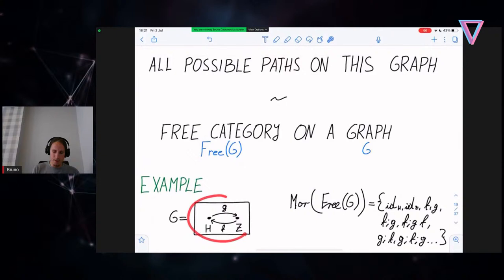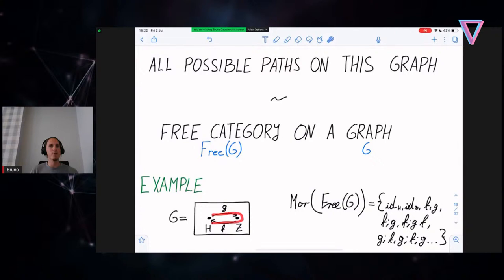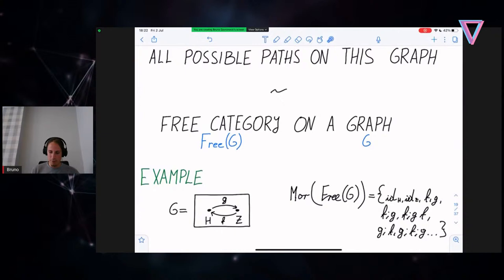Let's say we start with a graph with two vertices and two arrows between them. When you think of this graph as a category — when you construct a free category on this graph — it's quite similar, but in category theory the idea is to be explicit about all the things we might not otherwise state. When we turn this into a free category we get something of the same shape, but instead of just having two arrows we have many more that arise from following all possible paths.